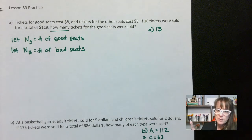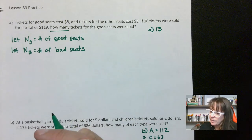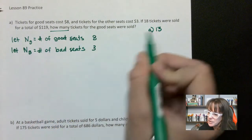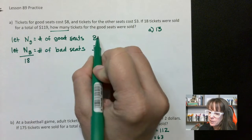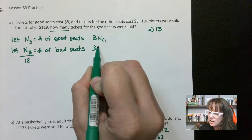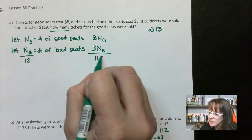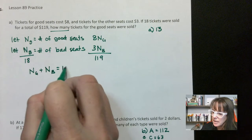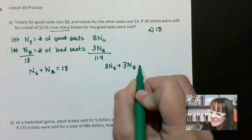Other types of questions on the SAT that look like this will say, instead of 'how many,' something like 'what was the cost of this' or 'find the cost of this.' Just keep that in mind. The good seats were $8 and the other seats were $3. Our quantity is 18 and our value — don't forget we put our variables here. So: number of good seats plus number of bad seats equals 18. And 8 times N sub G plus 3 times N sub B equals 119.